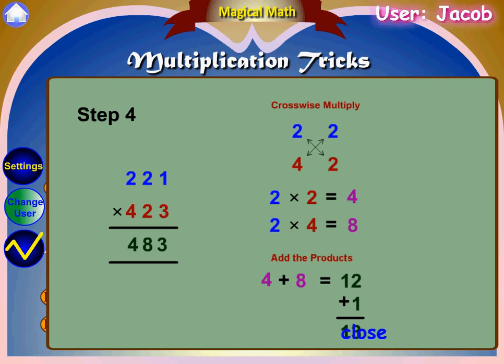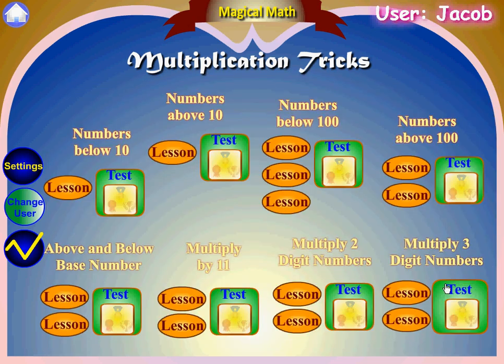Step 4: crosswise multiply 2 and 2, and 4 and 2. 2 times 2 equals 4, and 4 times 2 equals 8. Now add the products: 4 plus 8 equals 12.